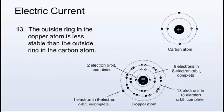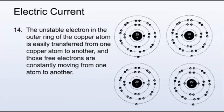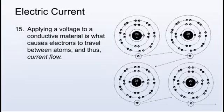The outside ring in the copper atom is less stable than the outside ring in the carbon atom. The unstable electron in the outer ring of the copper atom is easily transferred from one copper atom to another, and those free electrons are constantly moving from one atom to another. Applying a voltage to a conductive material is what causes electrons to travel between atoms, and thus, current flow.